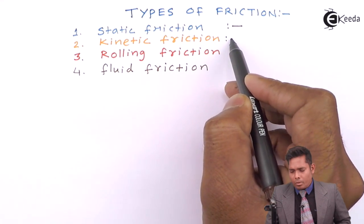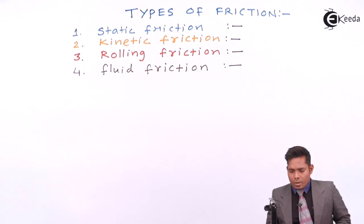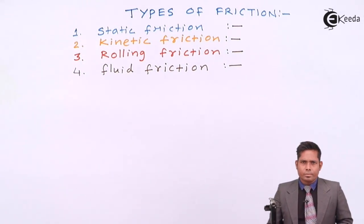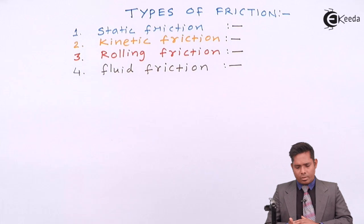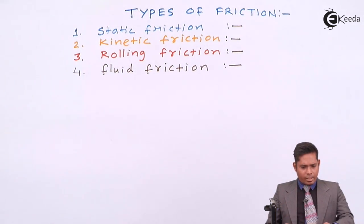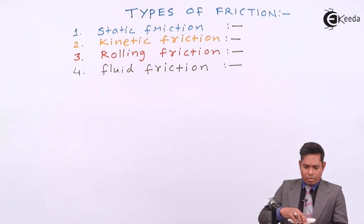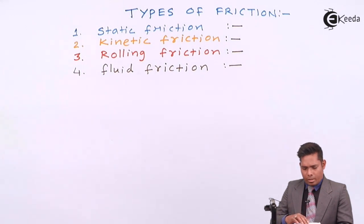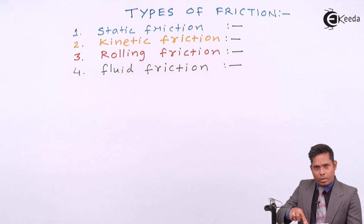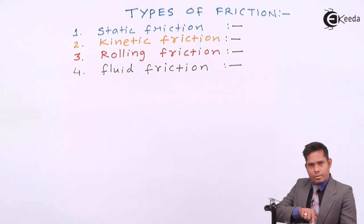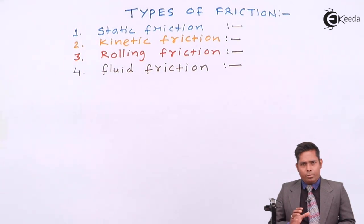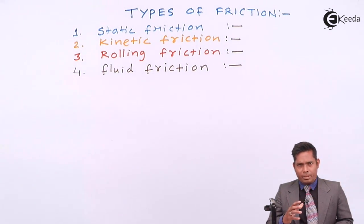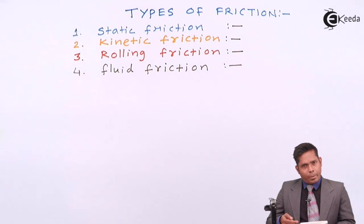I will give you a brief idea about all these frictions. Static friction is when one body is resting on the surface of another body. Just like if one body is resting on a surface and I apply a force, the body will tend to move in that direction. If I apply a force in this direction, this body will move in this direction.